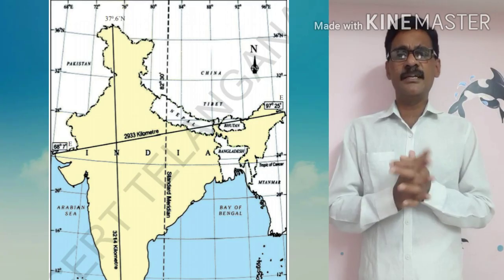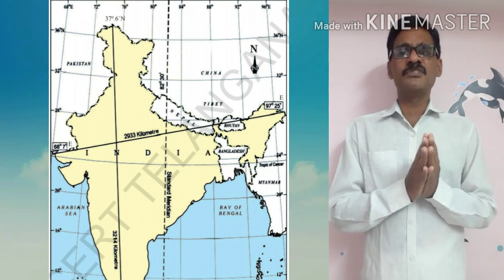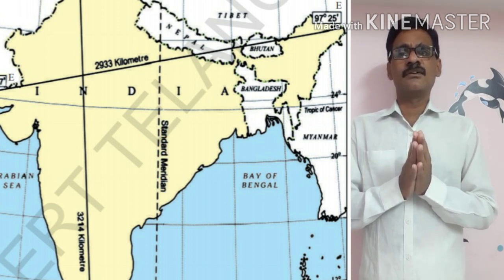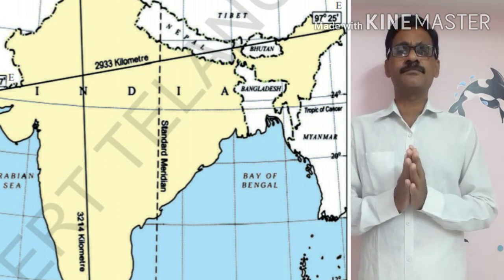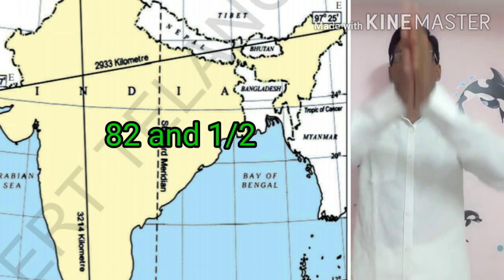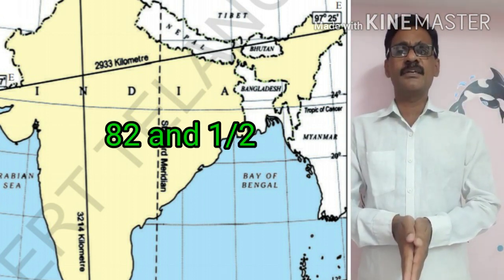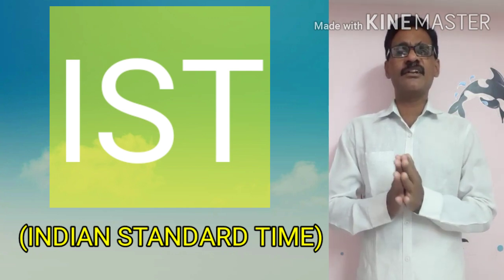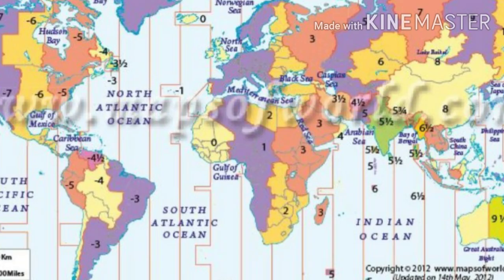In India, we have two time zones from east to west, with a time difference of two hours. To avoid that confusion, we take a longitude passing through the center of India vertically — 82 and a half degrees eastern longitude. This is taken as the standard meridian, and it is called Indian Standard Time. In the same way, other countries also have their standard time.